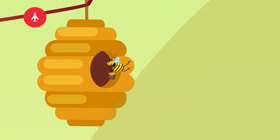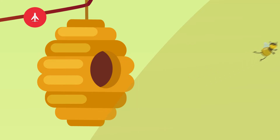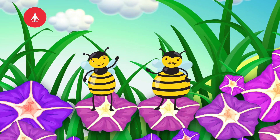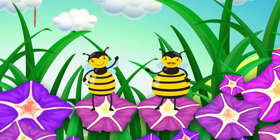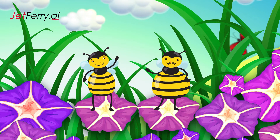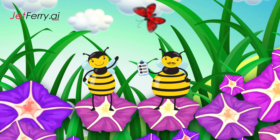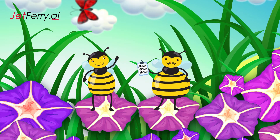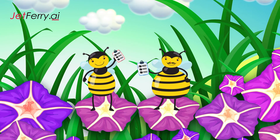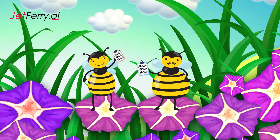He flies back to the hive, unloads, and moves to the next on the list. As he reaches the next assigned flower and is about to collect, his friend Roger flies in. Bob is confused. Roger tells him he is the one assigned to collect from that flower. They cross-check and it turns out they both were assigned the same flower. What a waste of time.